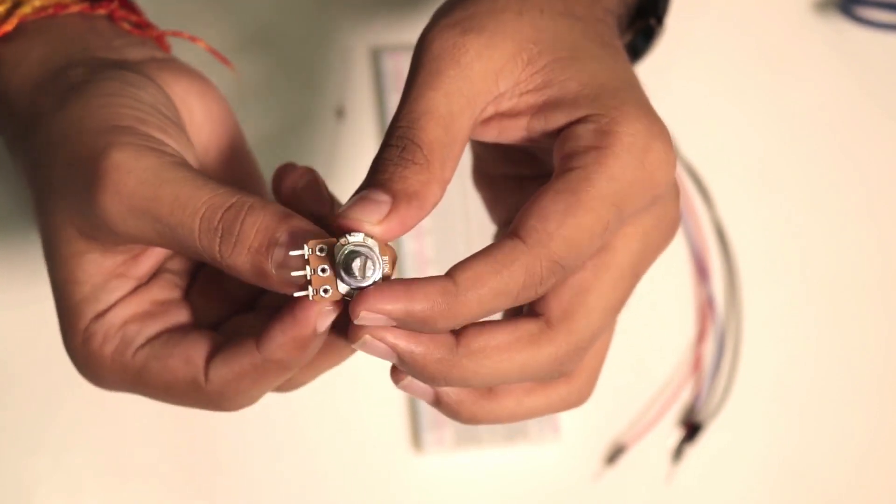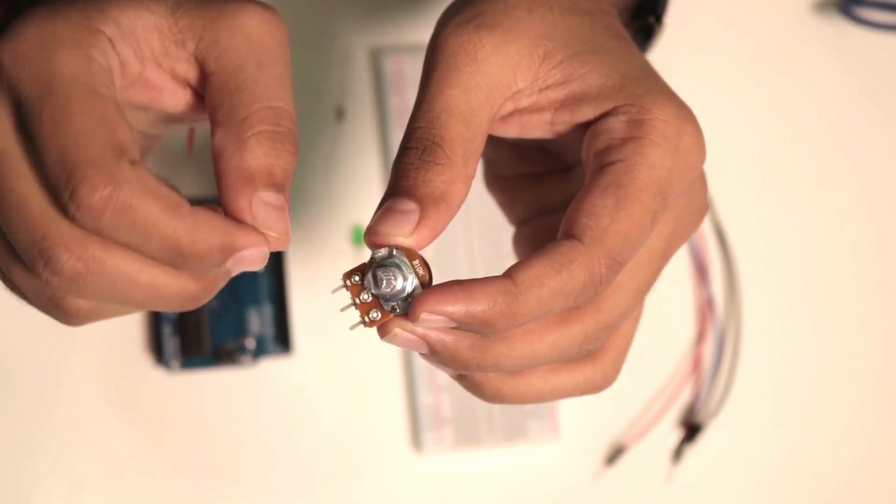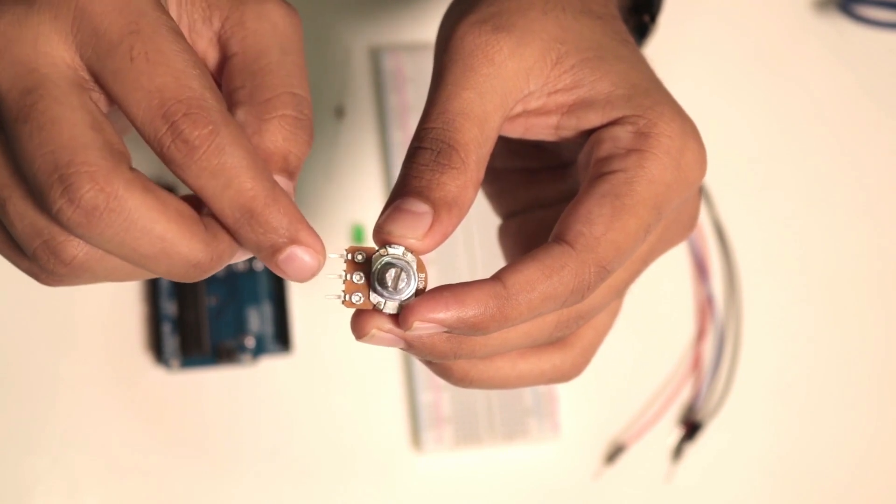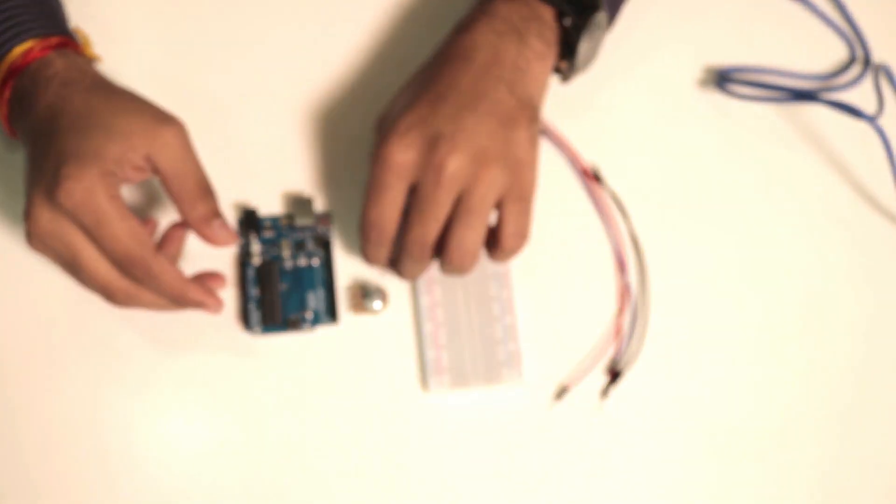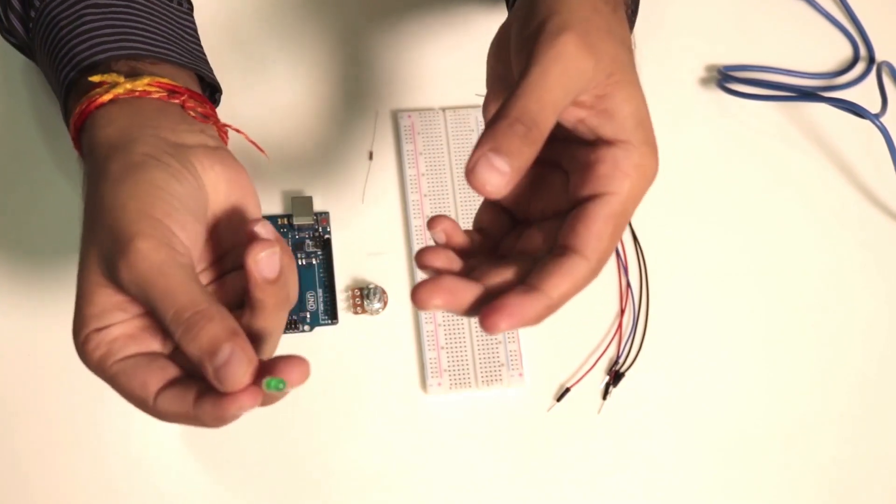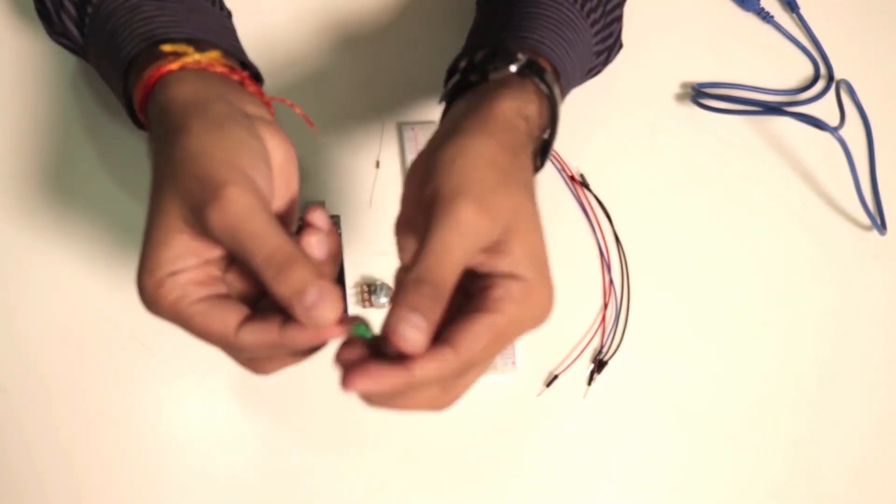You can rotate this knob to increase or decrease the resistance and also there is a fixed resistance value between these two terminals. And next we have this LED.